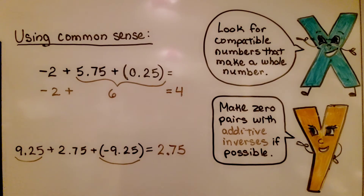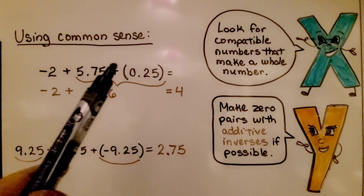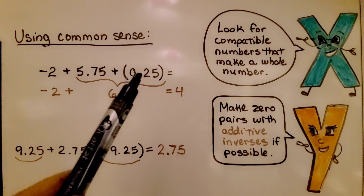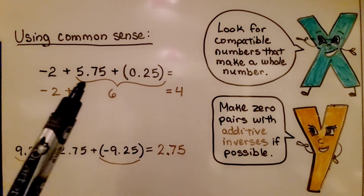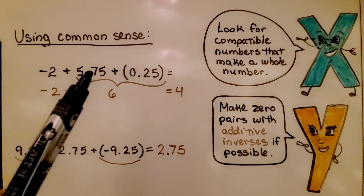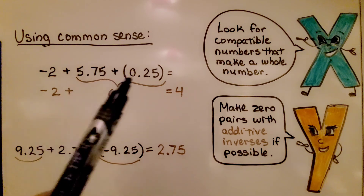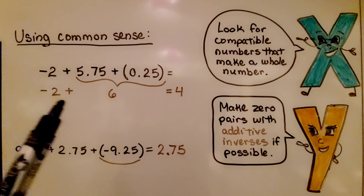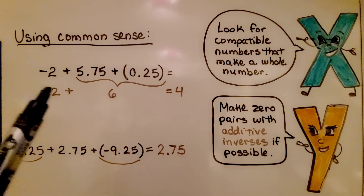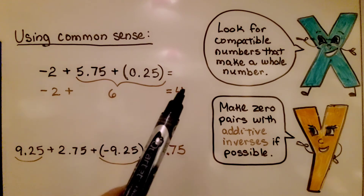Let's use some common sense. Here we have negative 2 plus positive 5.75 plus positive 0.25. We can look for compatible numbers that make a whole number — positive 5.75 and positive 0.25 make 6. Now we just add negative 2 plus 6. We find the difference because they have different signs, take the sign of the greater absolute value — the 6 is positive — and we get positive 4.